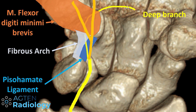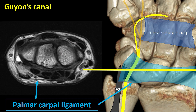Very important in this setting is the deep branch. The deep branch courses over the pisohamate ligament, which connects the pisiform with the hook of the hamate and acts as the floor over which the deep branch of the ulnar nerve runs. Above the nerve there is fibrous tissue — a fibrous arch that is part of the hypothenar musculature, though it's hard to visualize on MRI. This creates a narrow space where the nerve can get impinged by ganglion cysts or other structures, and the borders here are also areas prone to nerve compression or irritation.